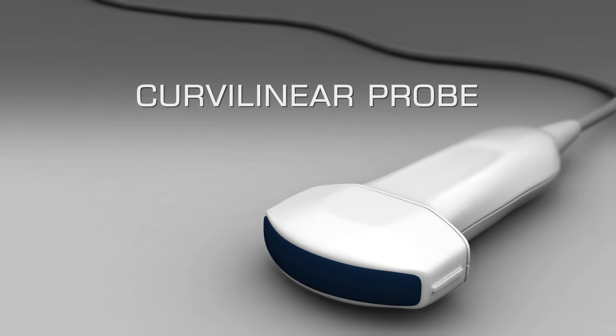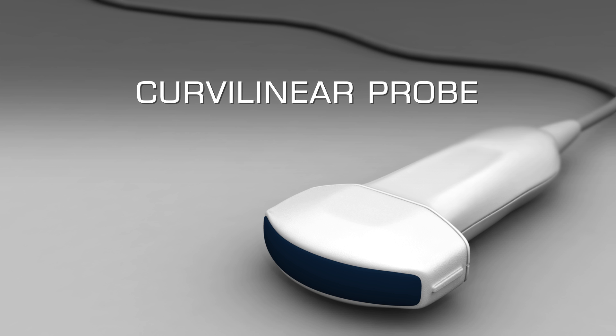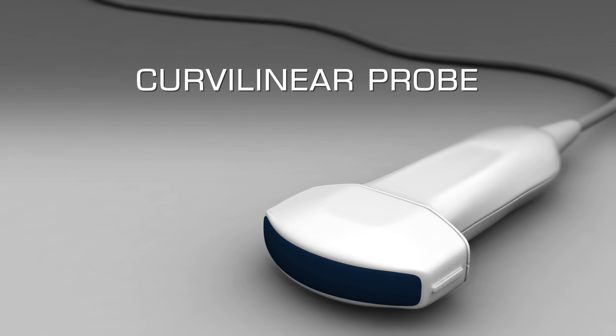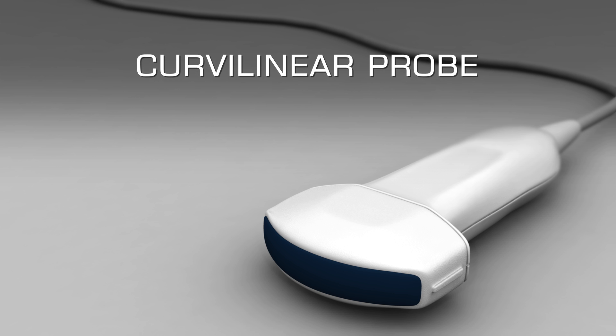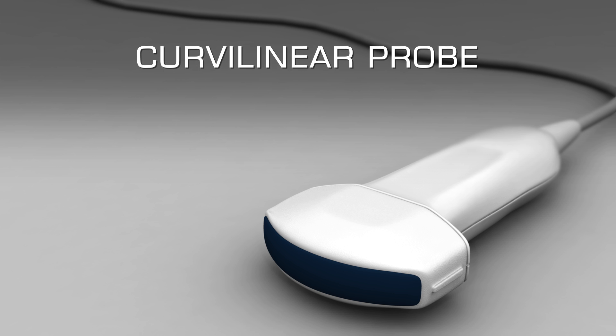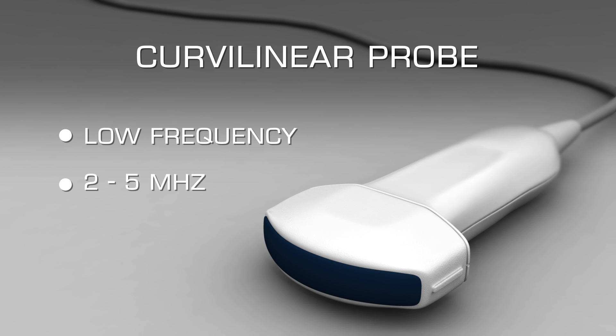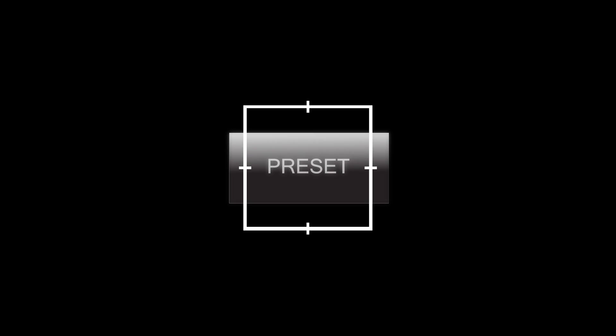The ideal transducer for assessing structures within the abdomen is a curvilinear array probe with a frequency range of 2 to 5 megahertz. Select the abdomen preset on the ultrasound device.